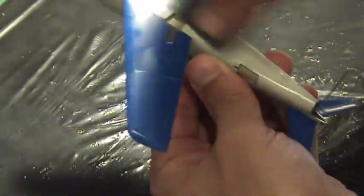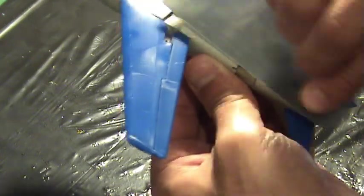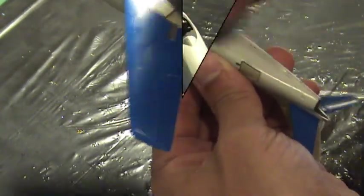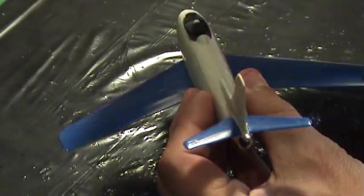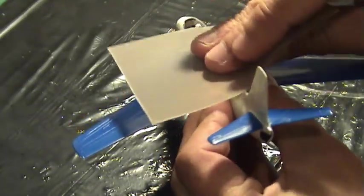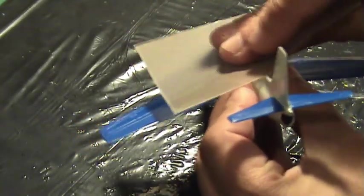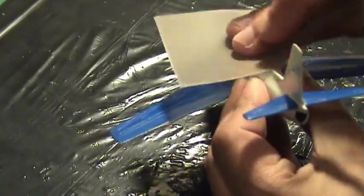The higher the grit number, the smoother the paper and finer the finished results. Use the sandpaper in a circular motion and do not apply a lot of pressure. Be gentle.